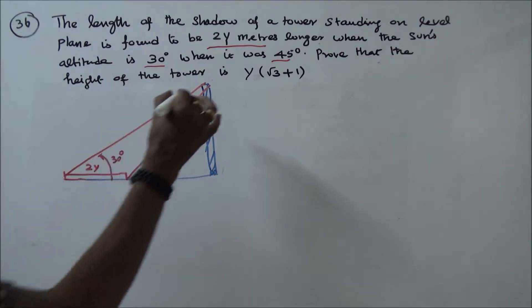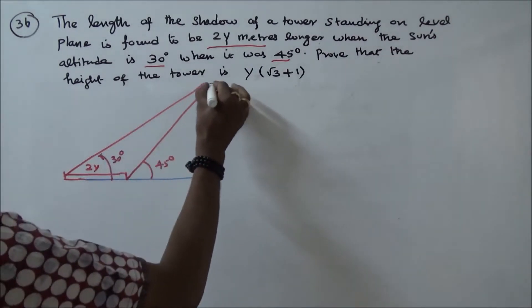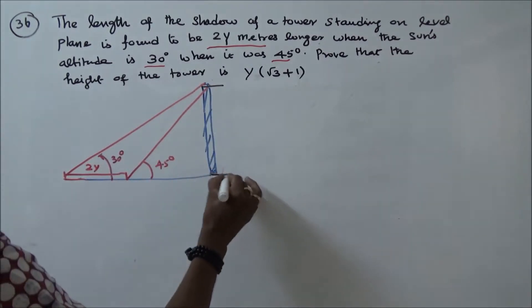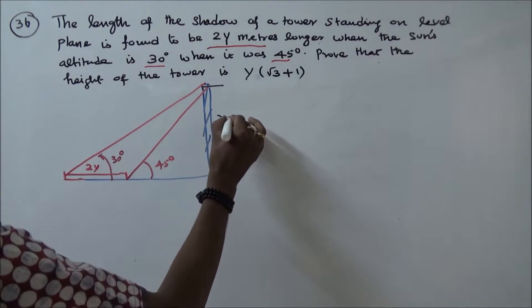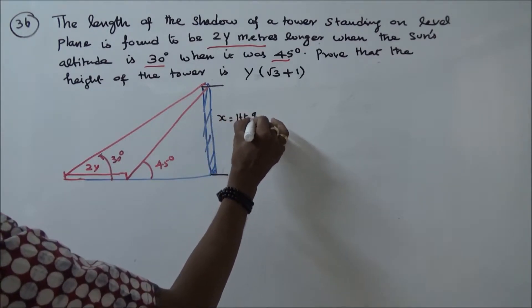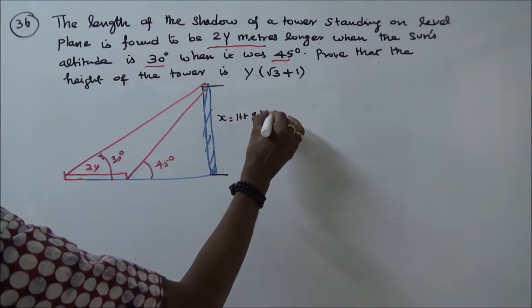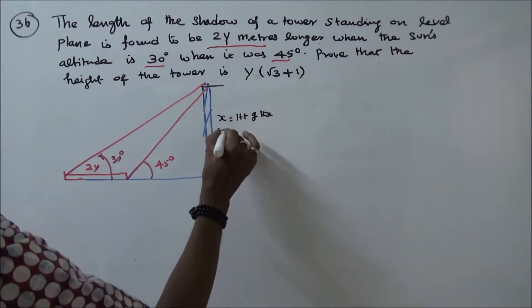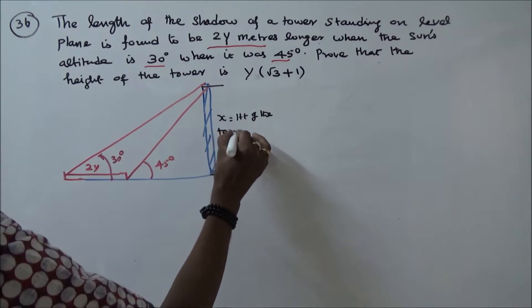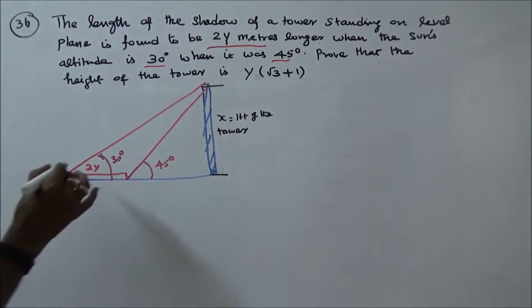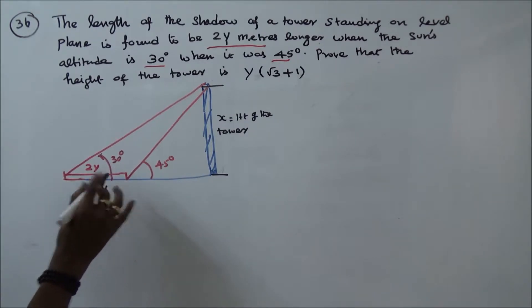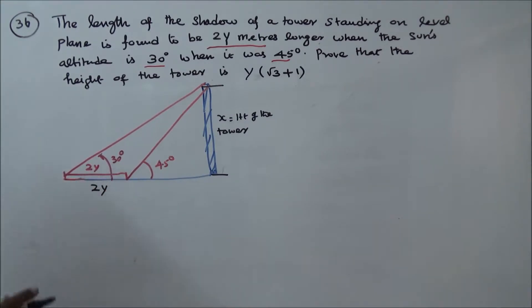We don't know the height of the tower, so let the height of the tower be x. The shadow length is 2y meters.